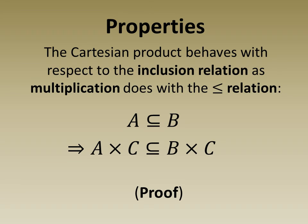Next, the Cartesian product behaves with respect to the inclusion relation as multiplication does with the total ordering relation and the real numbers. So if A is a subset of B, then the Cartesian product of A and C is a subset of the Cartesian product of B and C.